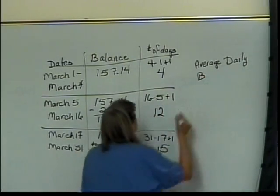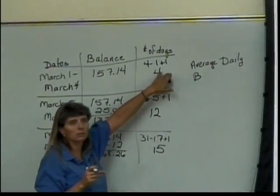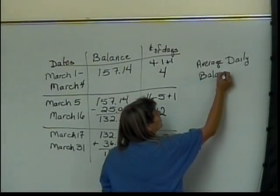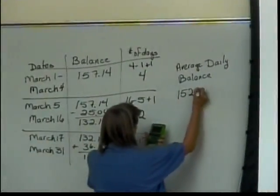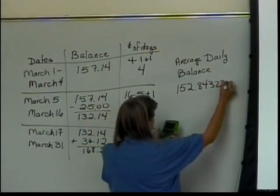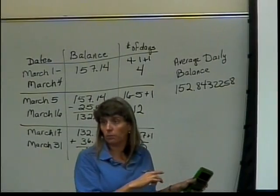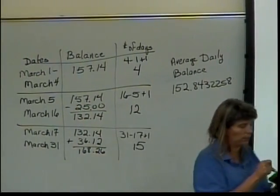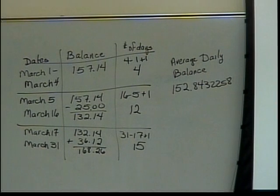The average daily balance comes out to be $152.8432258. It tells me that's for 31 days, which matches up with how many days there should have been in the billing period. So that's the answer to the first question. You put the numbers into L1 and the days into L2, then calculate the statistics using L1 and L2.